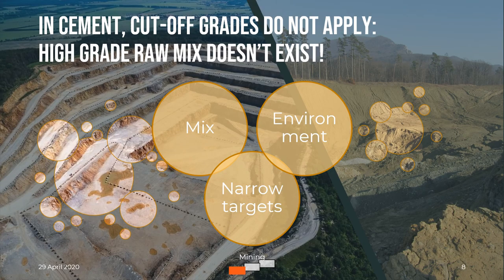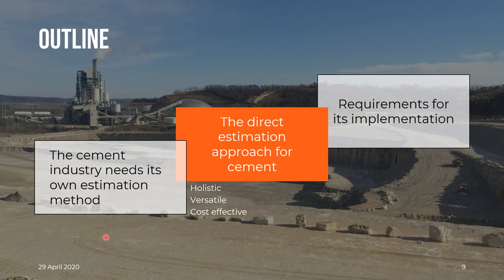The issue for us is that high-grade raw mix doesn't exist — cut-off grades do not apply in cement. You need to blend different rock types such as limestone and clay and other materials to obtain a mix that hits your narrow quality targets while respecting your environmental constraints. You can only tell if a bench within your quarry can be used for raw mix production in conjunction with all the other materials entering the process, not by applying a cut-off grade. In fact, if you just go after high-grade limestone, it might end up being very expensive, as you need a lot of good clay and costly correctives such as bauxite, high-grade iron and sand to hit your quality targets. So the cement industry needs its own estimation method.